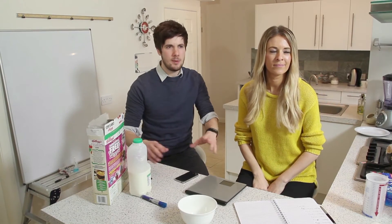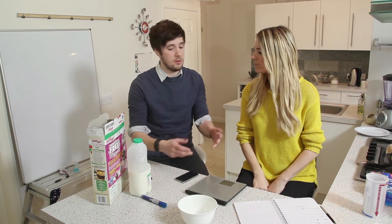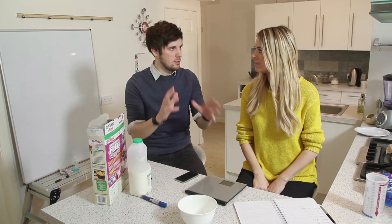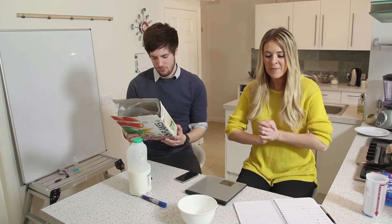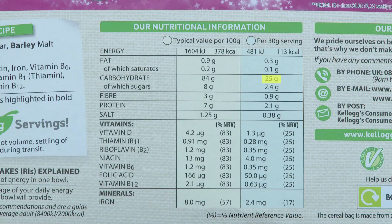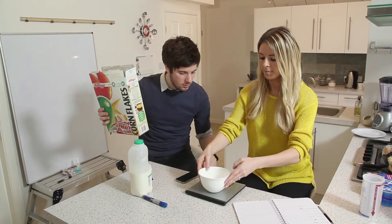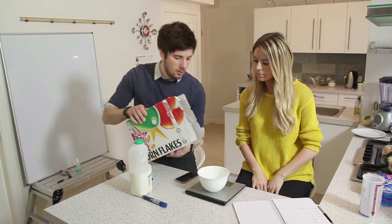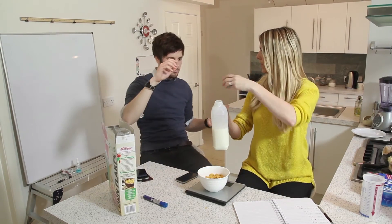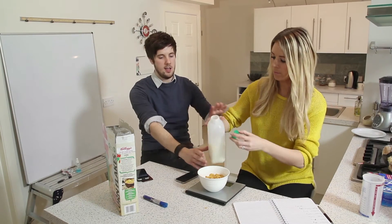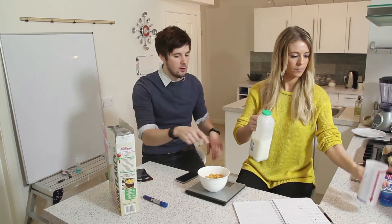Breakfast can be quite hard to calculate with things like milk and cereal. Starting with the cereal: the back of the packet tells you how many carbs are in each portion. There's a 30-gram portion with 25 grams of carbs. Zeroing the scales, pour out the cereal. For the milk, we want to measure it rather than just pour it on, so we can do accurate calculations.